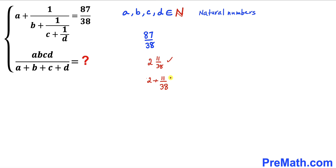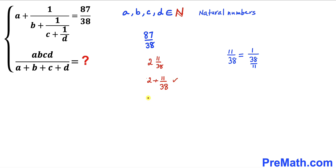Now we are going to tweak the fraction 11 divided by 38. Keep in mind that 11 divided by 38 can be written as 1 divided by (38 divided by 11). So this whole expression becomes 2 plus 1 divided by (38 divided by 11).